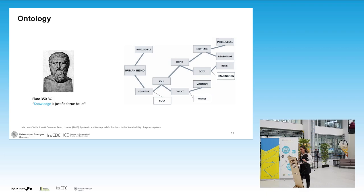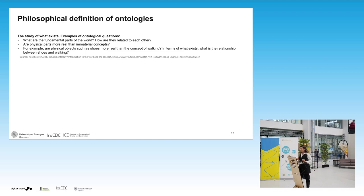If we try to define the philosophical definition: in general, ontology is still the study of what exists. Some examples of philosophical questions include: what are the fundamental parts of the world? How are they related to each other? Are physical parts more real than immaterial ones? For example, are objects such as shoes more real than the concept of walking? And what is the relation between shoes and walking? So we still define these objects and relations, but this deals more with thoughts and physical versus non-physical objects.